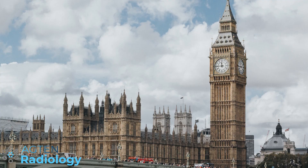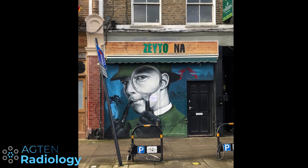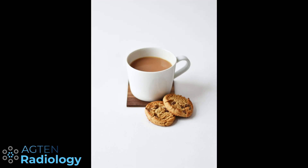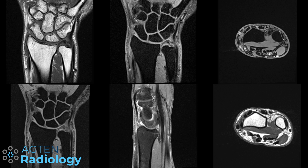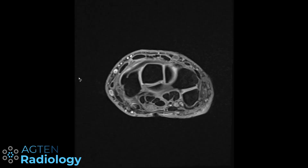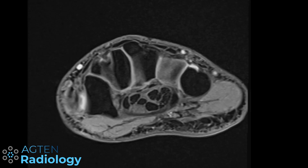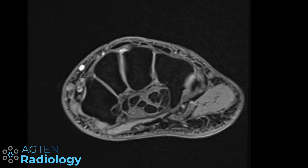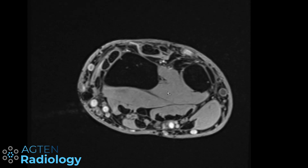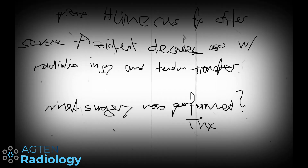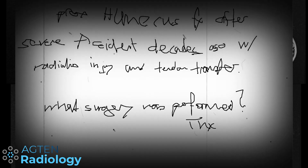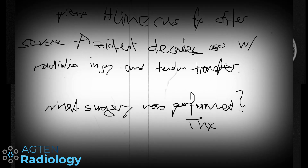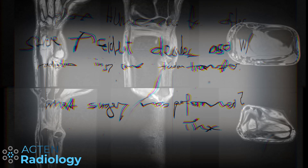So in a great British manner, let's take out our hats and magnifying glasses, just like Sherlock Holmes, and let's drink a lovely cup of tea and sit back and relax while I explain to you the scenario and how you can solve this mystery case together with me. It's a lovely morning after your well-deserved first holiday after all the lockdowns, and this chap comes for an MRI of his right wrist. He is around 40 years old. The absolutely poorly handwritten request reads: proximal humerus fracture after severe accident decades ago with radialis injury and tendon transfer. The query is what tendon transfer or surgery was performed.